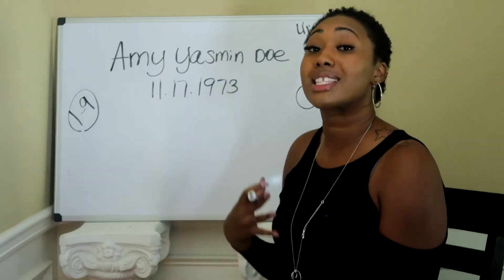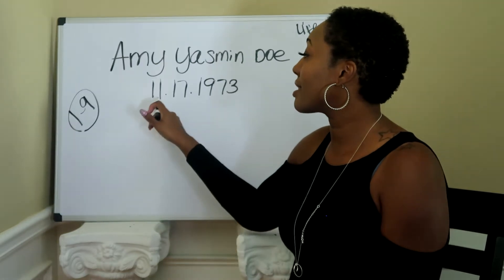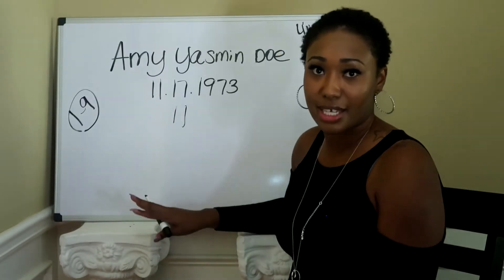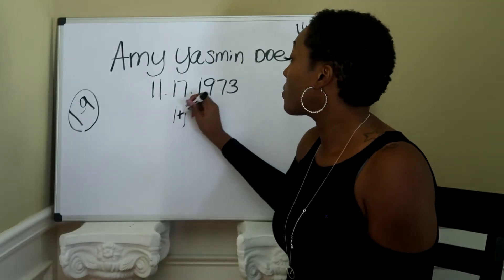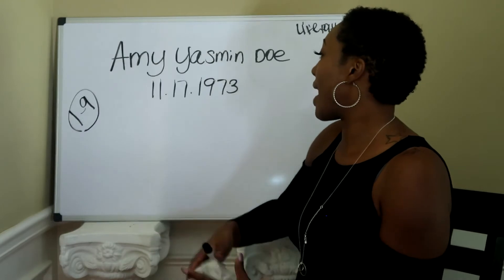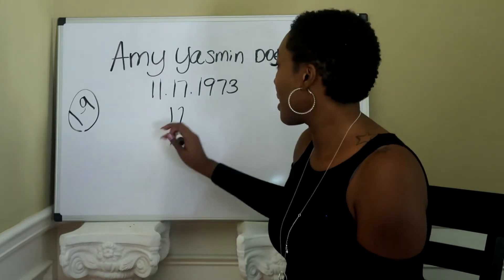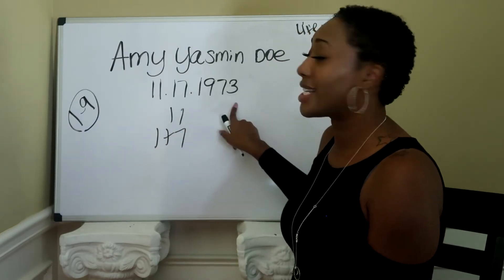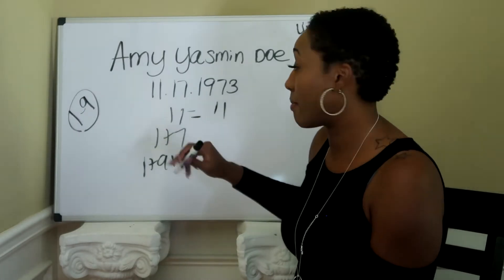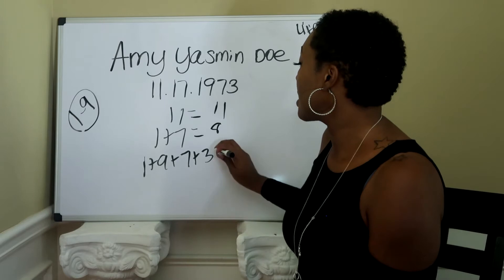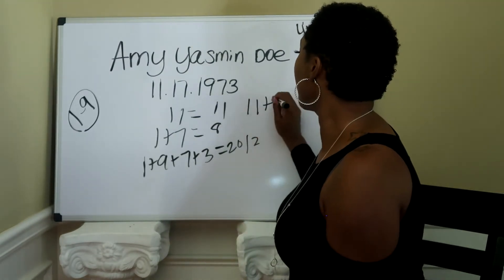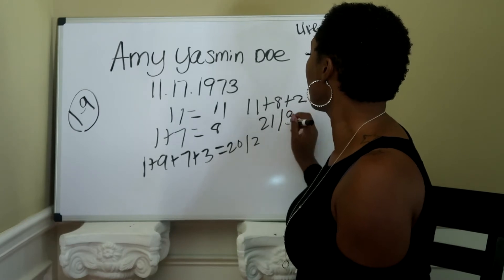It can get a little tricky when it comes to master numbers, because in the Pythagorean system they don't break down 11 — 11 is just 11. But if you do one plus one, that equals two, so 11 is still reduced to two. So let's start adding it up. We have 11 for the month, then 17 is the date, so one plus seven. And then 1973 being the year: one plus nine plus seven plus three. Using Pythagorean, we keep 11 as is. One plus seven is eight, and 1973 reduces to 20, which reduces to two.